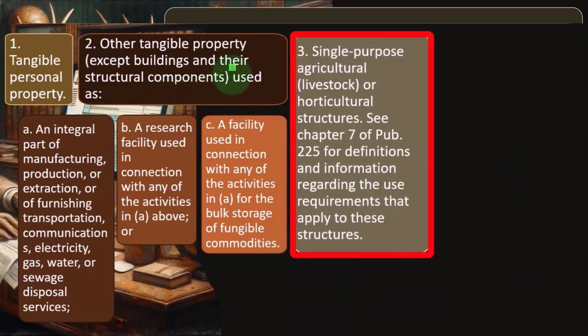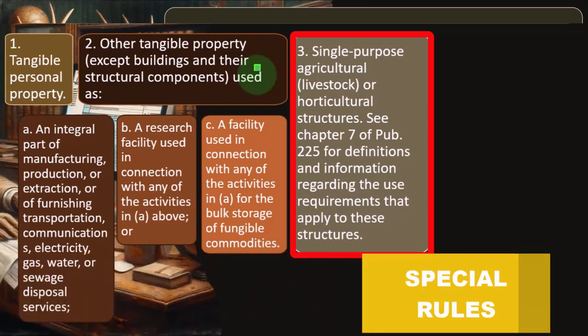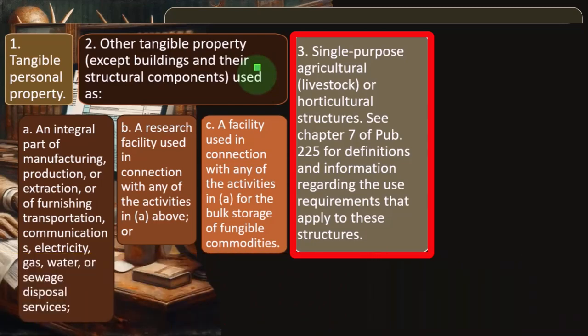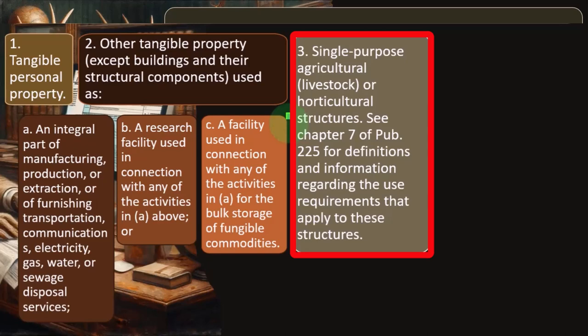Number three, single purpose agricultural, livestock, or horticultural structures. The farming area often has special rules. If you're a tax preparer, be careful of those special rules — specializing in those areas might be a place to go. If you're not familiar with them, you'll need to either get familiar or not take on those clients, as it might be outside your scope. See Chapter 7 of Publication 225 for definitions and information regarding the use requirements that apply to these structures.